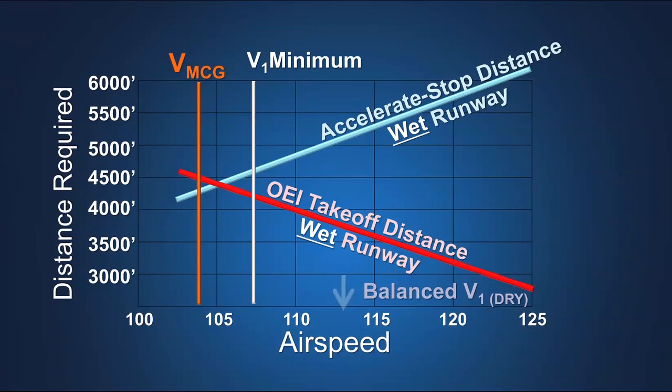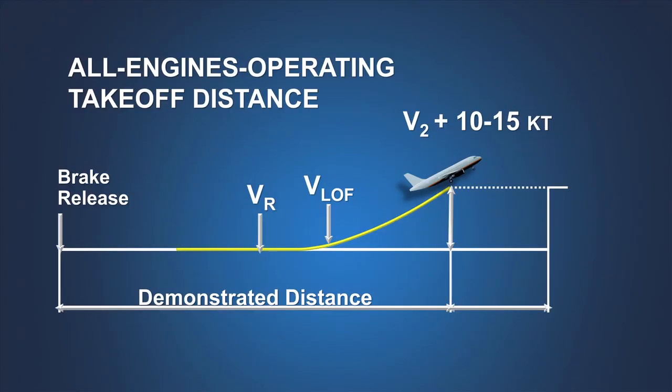When V1 speed is limited by VMCG speed, the takeoff on a wet runway will be accelerate stop limited. Note that the all-engines-operating takeoff distance for a wet runway remains unchanged from that for a dry runway.